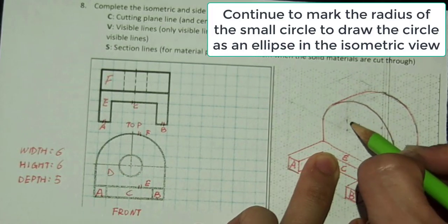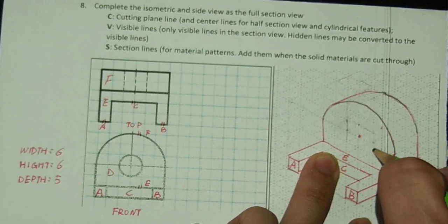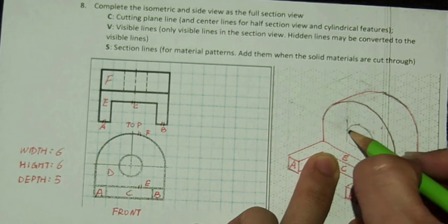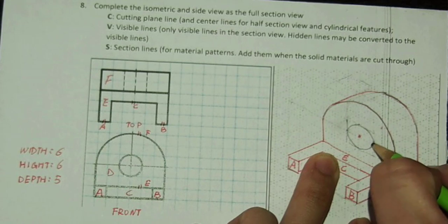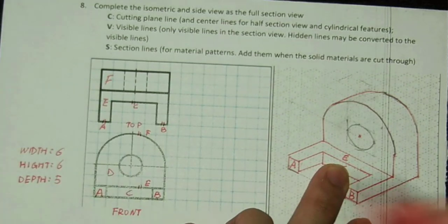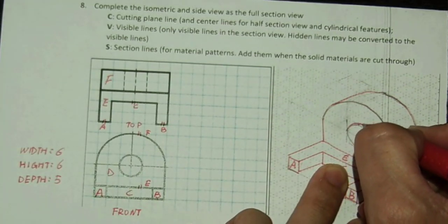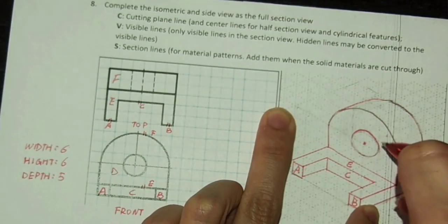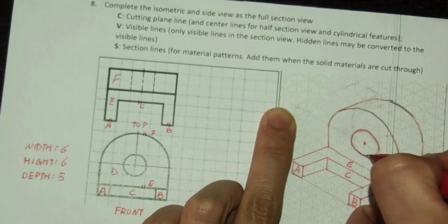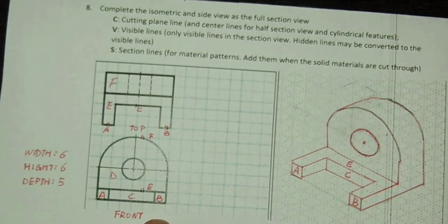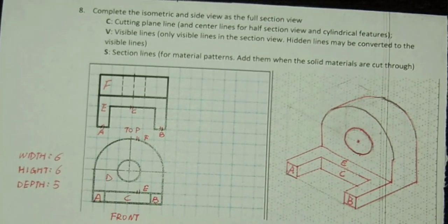To draw the hole, we use the same strategy: from the center point, define the radius of the circle in the isometric view; from the radius, draw the square box; from the square box, draw the ellipse. The circle becomes an ellipse in the isometric view. Because the depth of the hole is two units, the ellipse on the back will not intersect with the ellipse in front, so the front visible ellipse is the only visible line you can see for the hole in the isometric view.